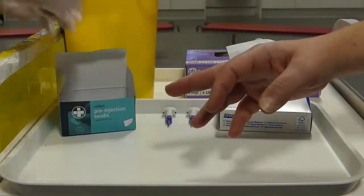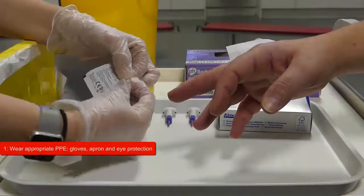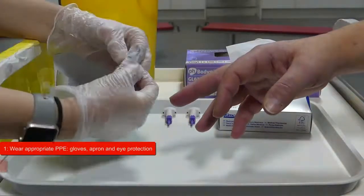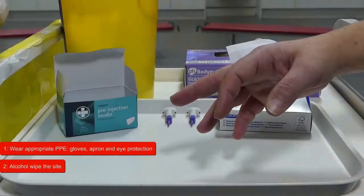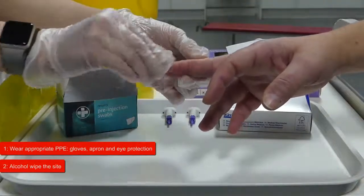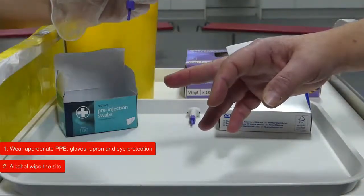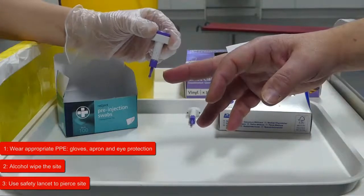We'll watch this again as a quick recap. First ensure you're wearing appropriate PPE. Then alcohol wipe the site. Next using the safety lancet pierce the site.